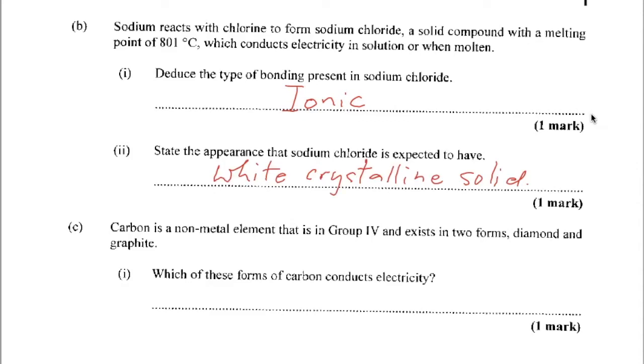Part C. Carbon is a non-metal element that is in group 4 and exists in two forms, diamond and graphite. The moment we see these, we should be thinking allotropes. Which of these forms of carbon conducts electricity? And of course that would be graphite.